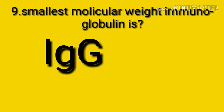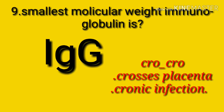When you think about IgG, remember the word 'cro-cro.' This gives you two key points about immunoglobulin G: first, it is present in chronic infection, meaning it mediates the secondary immune response; and second, it can cross the placenta. So remember the word cro-cro.